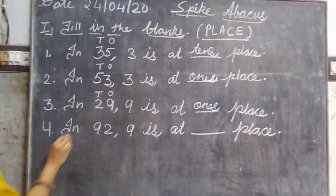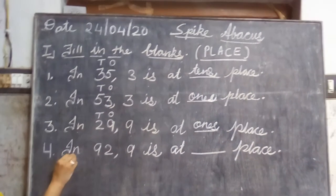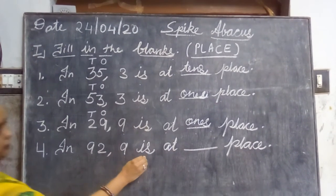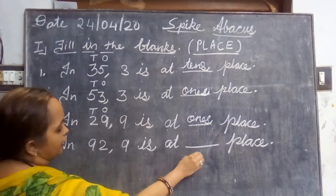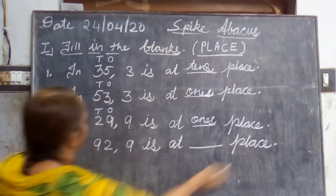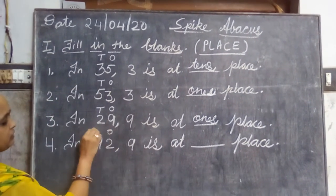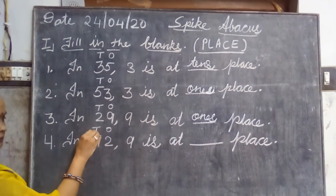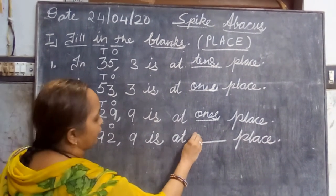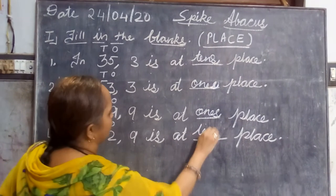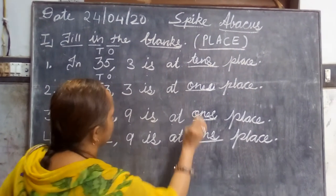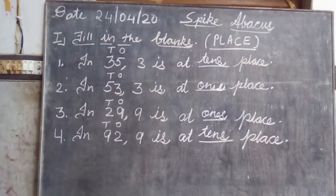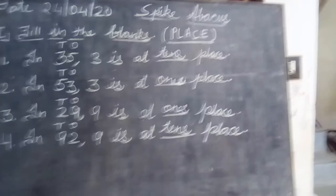Same type of question, read with me. In ninety-two, nine is at dash place. Again write here ones and tens. Now nine comes at the tens place. So we will fill here in the blank: tens. Okay? Go through it and solve the rest of the sums in your copy. Thank you.